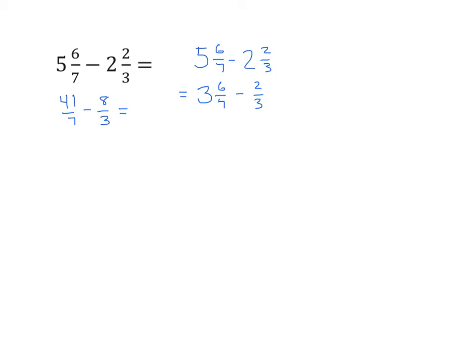Now we'll change my minuend to an improper fraction. And I get 27 sevenths minus 2 thirds. We find our common unit, which is 21.